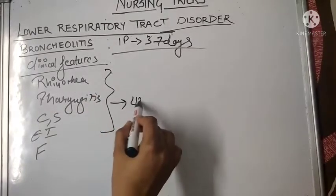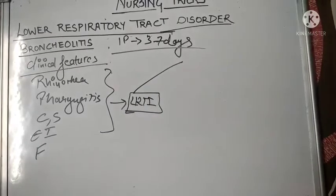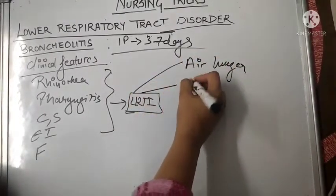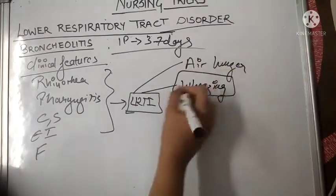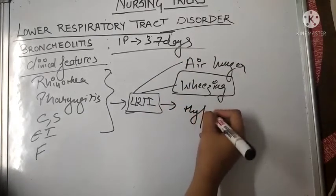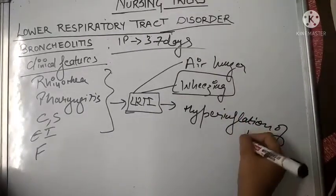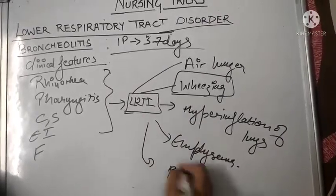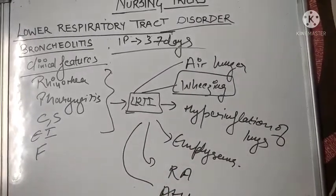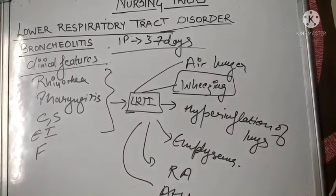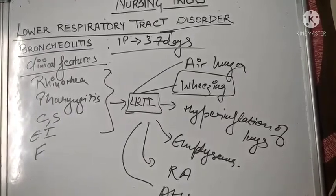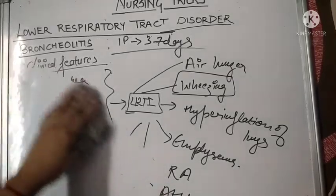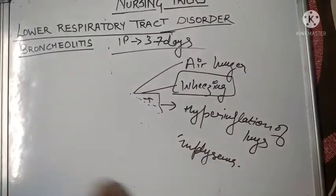Further clinical features of LRTI progression include respiratory acidosis, atelectasis, dyspnea, crackles, diminished breath sounds on auscultation, increased anterior-posterior diameter of the chest due to trapped air, and increased resonance in the lungs.